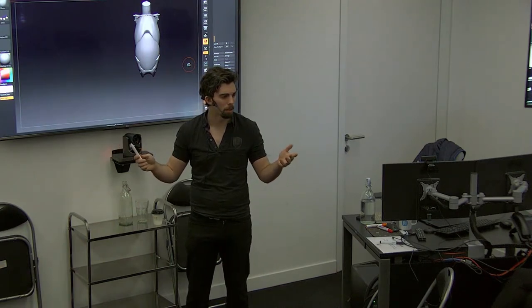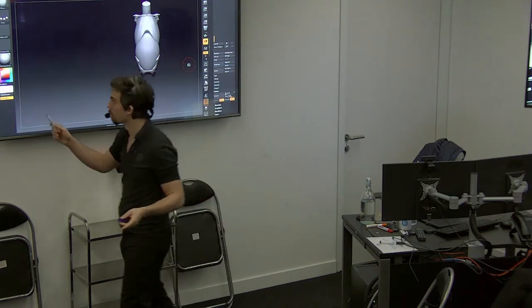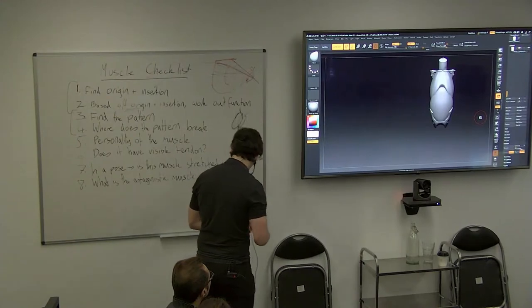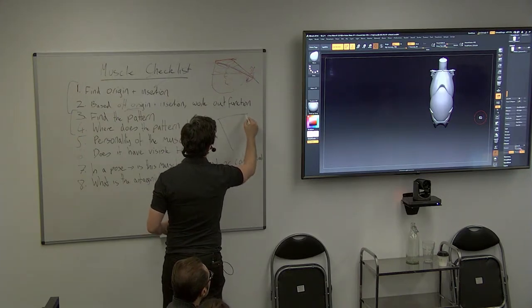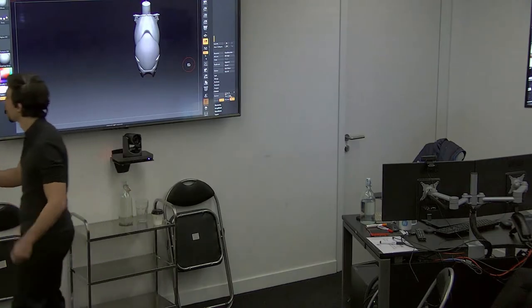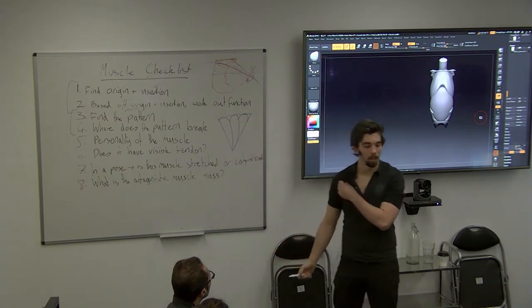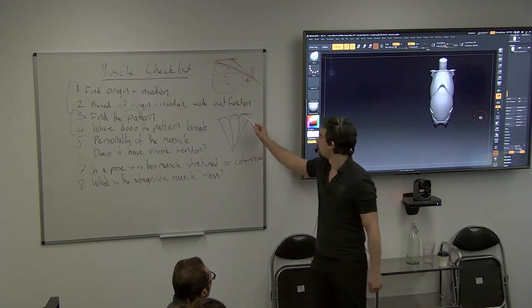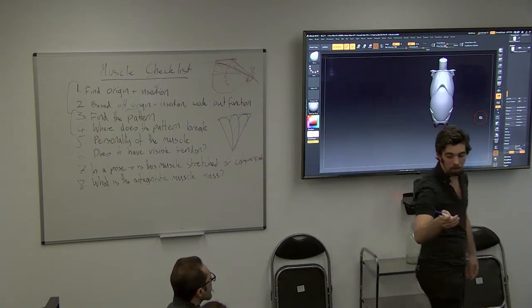Let's try this with another muscle — deltoids. The deltoid is an interesting one because the pattern is fairly easy to define: it comes from the name. The Greek symbol delta gives us 'deltoid' — looking at it from the side gives you that triangle. You can take the pattern further because it breaks down into three separate teardrop-shaped portions: the anterior portion grabs the clavicle, the medial portion grabs the acromion, and the posterior portion grabs the scapula at the back.